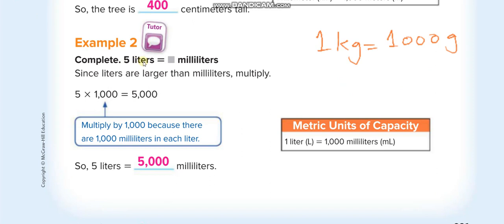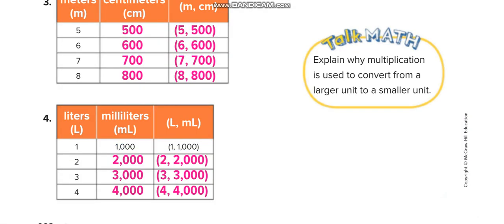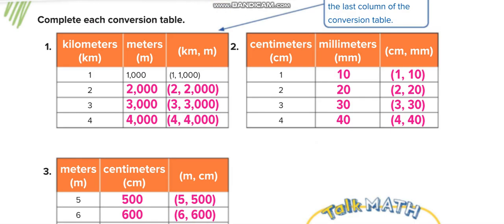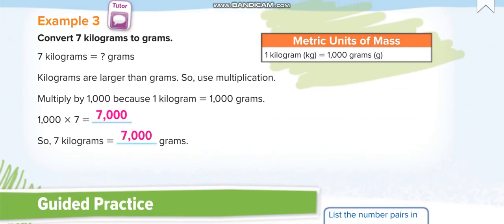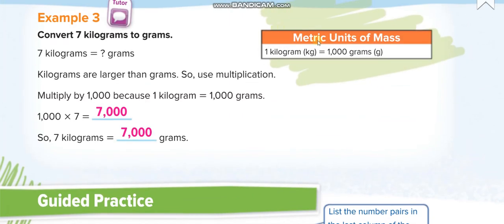Next example: five liters equals how many milliliters? One liter is equal to one thousand milliliters, so five liters is five times one thousand, which equals five thousand milliliters.